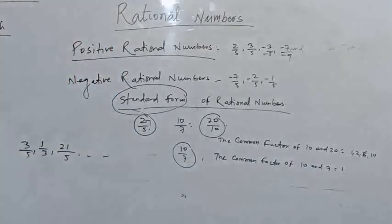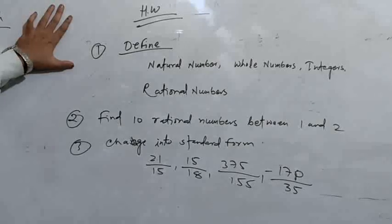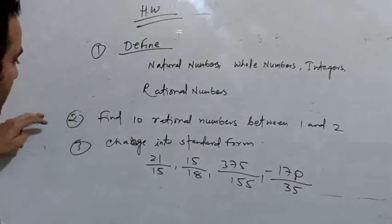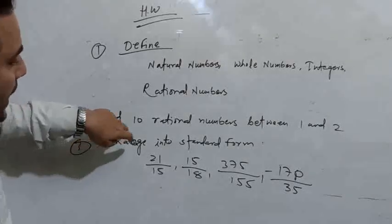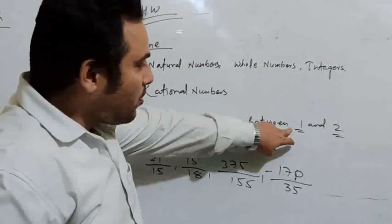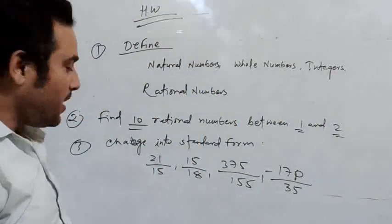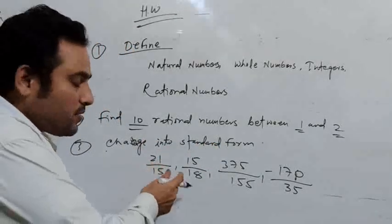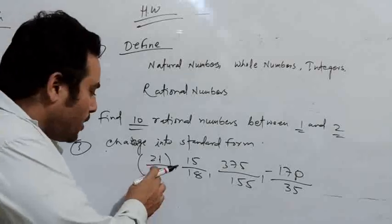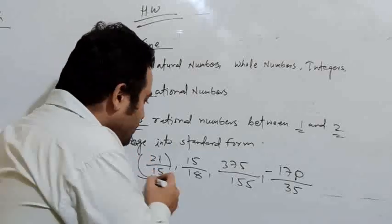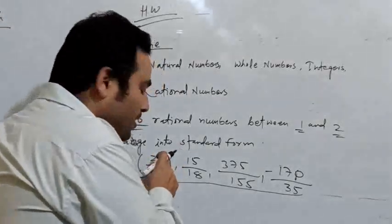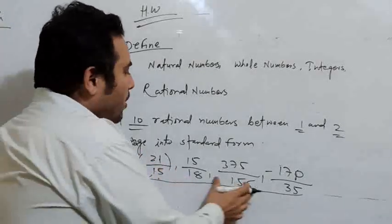Here is some homework for you. First, define natural number, whole number, integer, and rational number. Next question: find 10 rational numbers between 1 and 2. You have to change 1 and 2 with a common denominator and then you can find 10 rational numbers. Next question: change into standard form. First find the HCF, then find the HCF of numerator and denominator, and divide both by it.